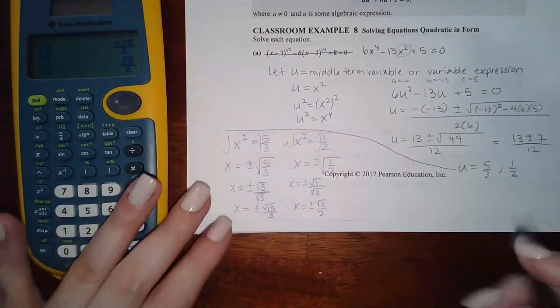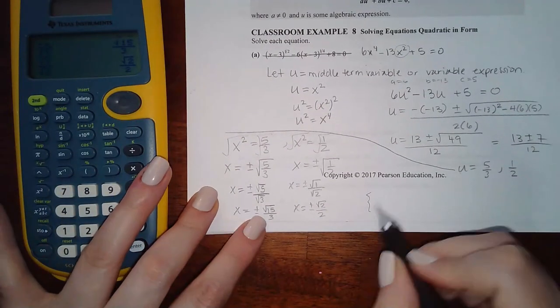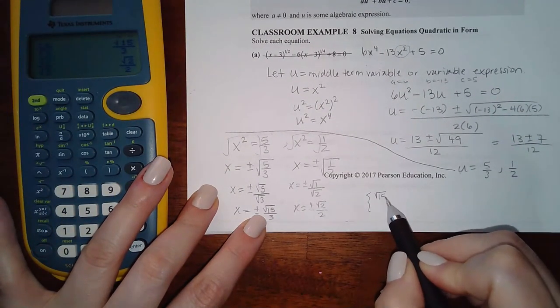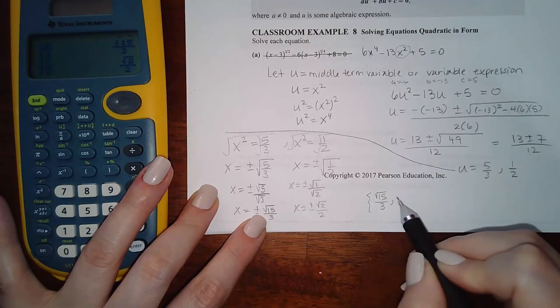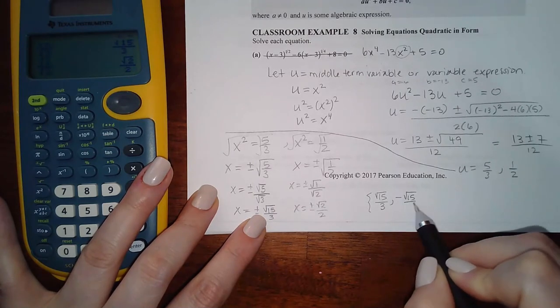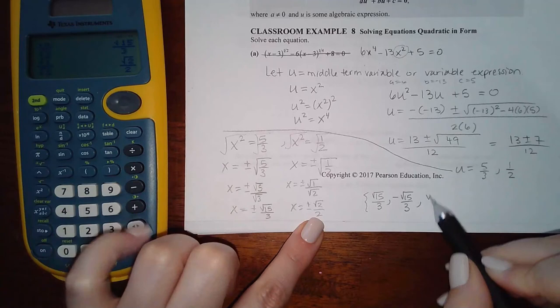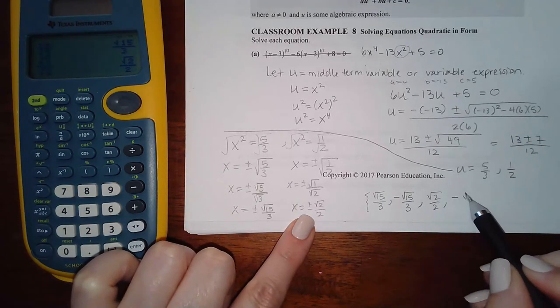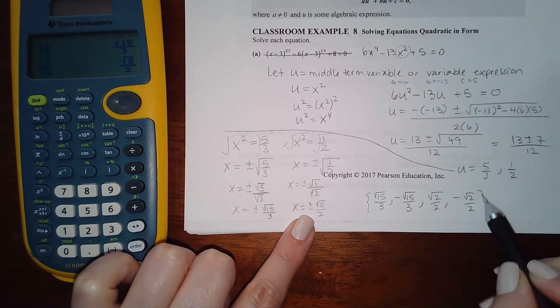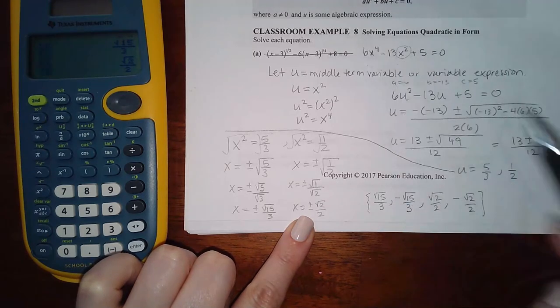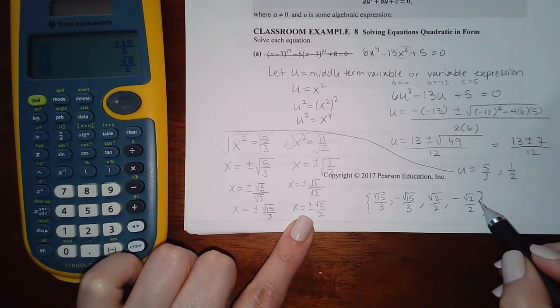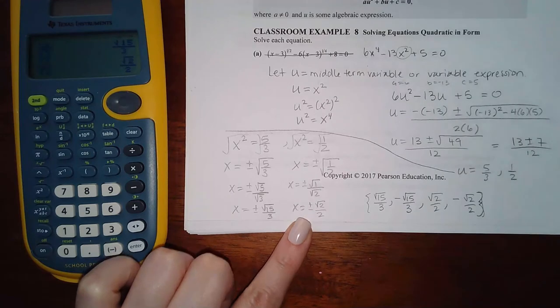How many answers is that? That's four answers. Positive square root of 15 over 3, negative square root of 15 over 3, positive square root of 2 over 2, and negative square root of 2 over 2. And since it's a fourth power problem, it makes sense that we would have four solutions here.